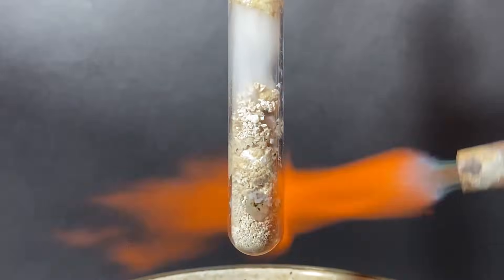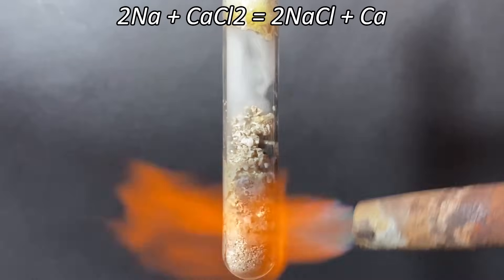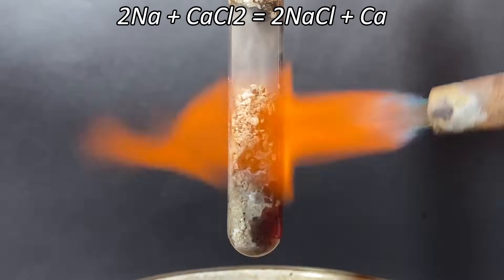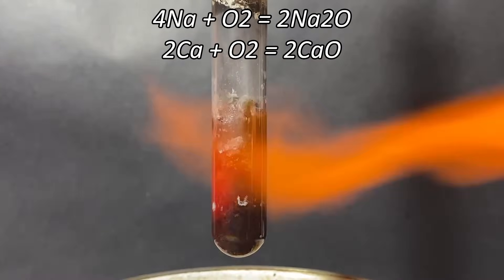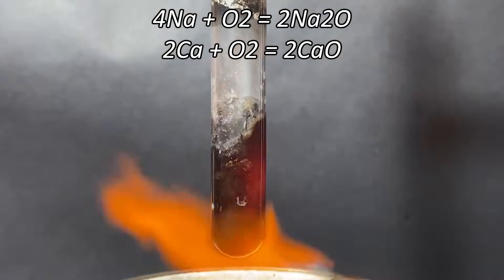Also, you may not see it on camera, but this test tube was plugged with toilet paper to limit air from going into the test tube. That's because calcium as well as sodium react with air to produce oxides, which would lower the yield significantly.